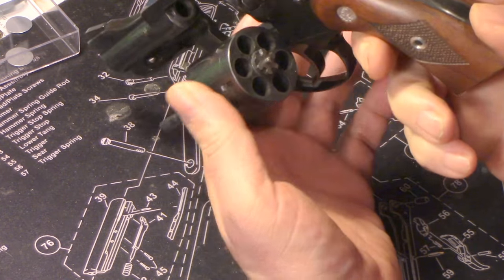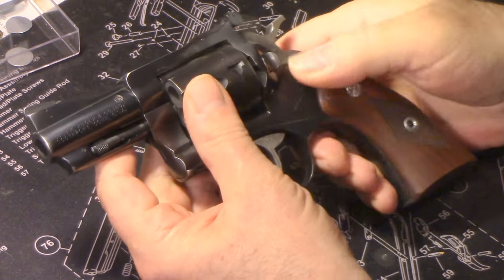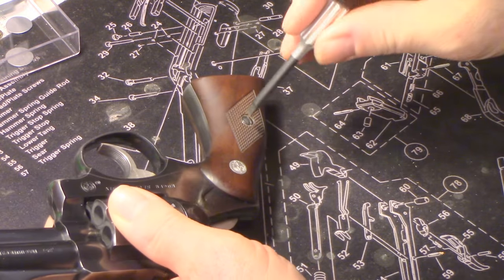Start off by making sure the firearm is empty, it's functional, and we'll begin by taking off the grips.